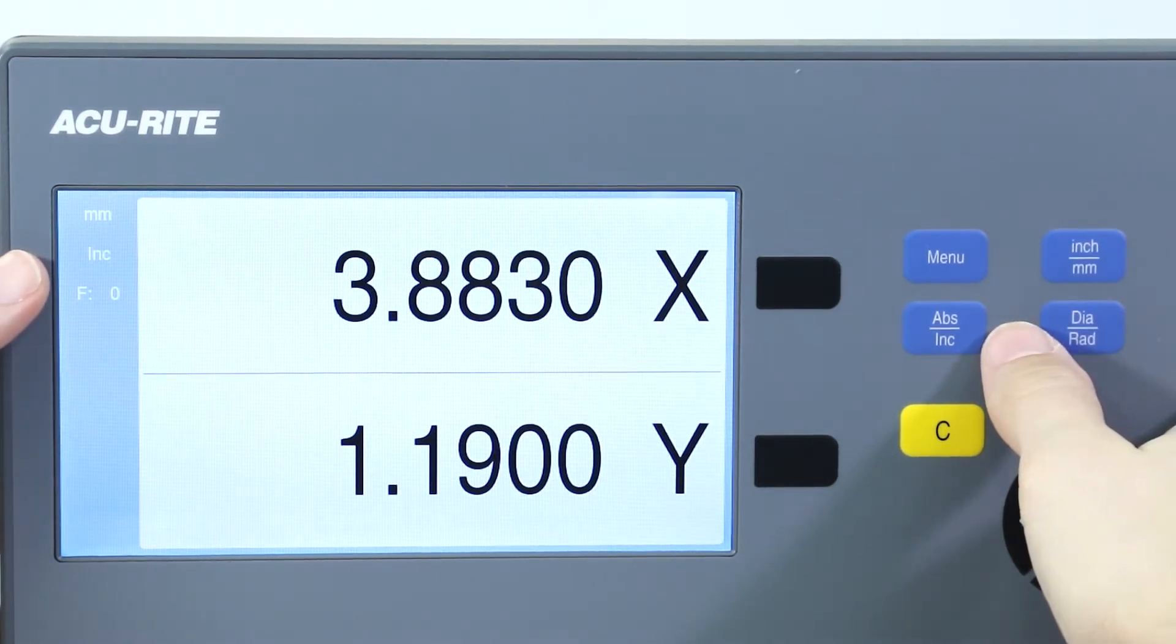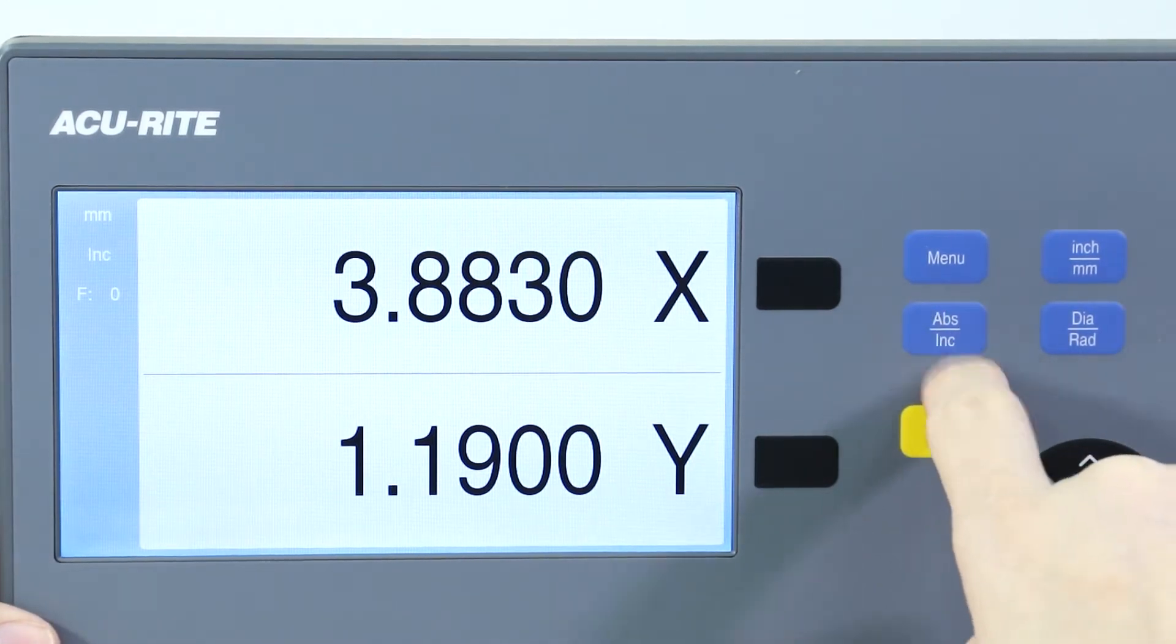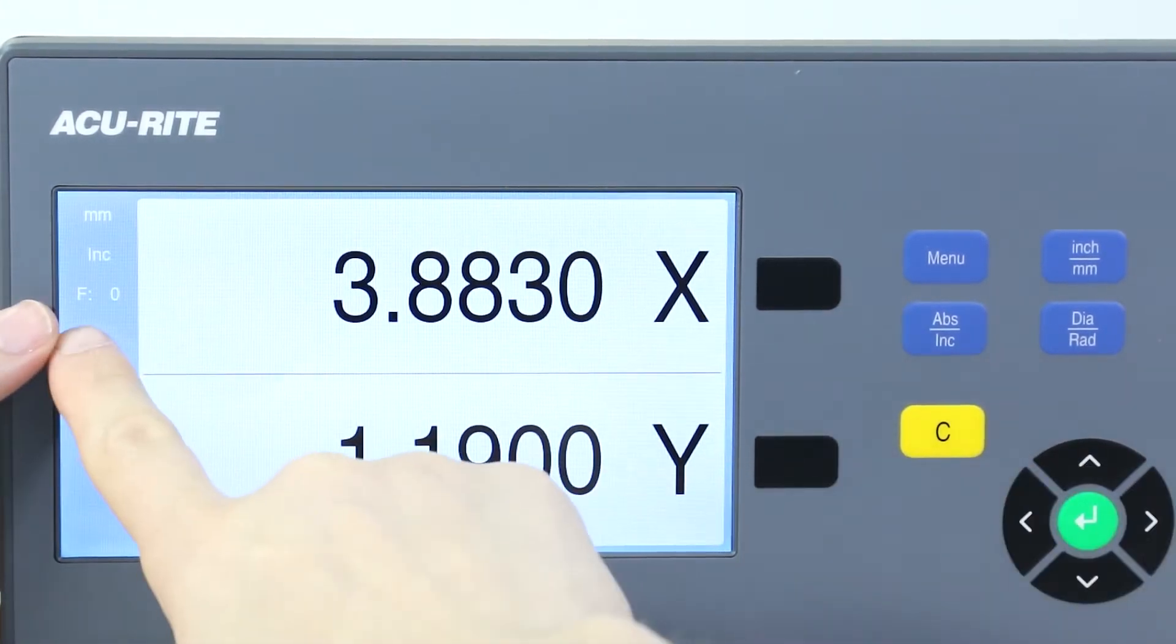Underneath that we can see if we're reading absolute or incremental position information, and that also has a dedicated button. Just underneath that we can see what our feed rate is.